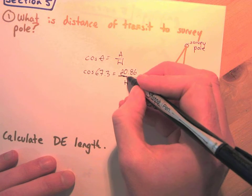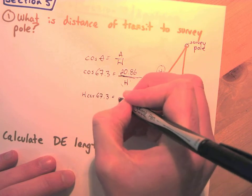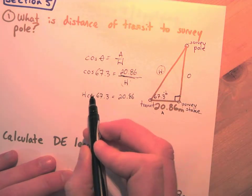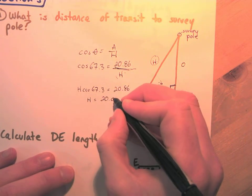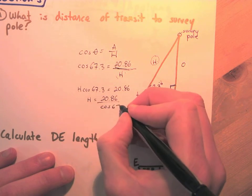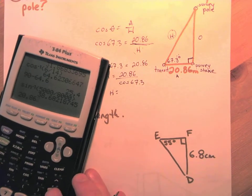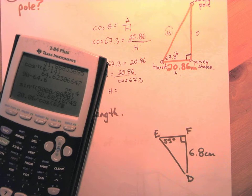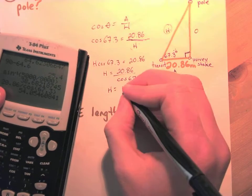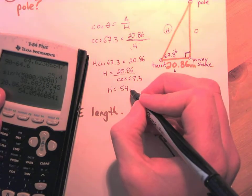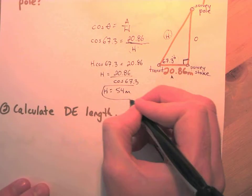Cosine is our formula: cos θ = A/H. Substituting: cos 67.3° = 20.86/H. Rearranging — multiply both sides — we get H × cos 67.3° = 20.86, so H = 20.86 / cos 67.3°. Typing that into the calculator: 20.86 ÷ cos 67.3° gives us 54 meters. So the distance from transit to survey pole is 54 meters.